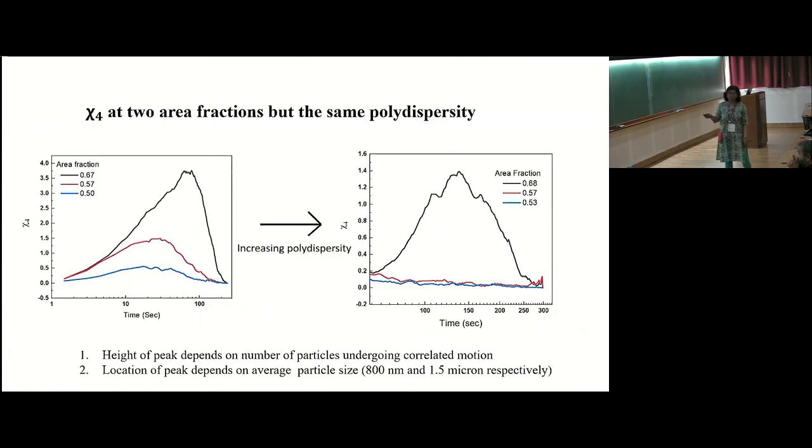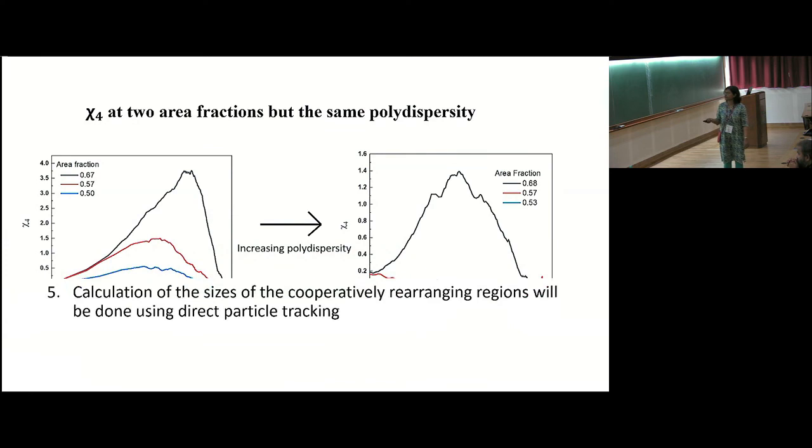So just as a comparison, what happens when we increase the polydispersity? So this is for the polydispersity of 9%. This is for 18%. So notice the scale here. This is the chi-4 for the suspension with the lower particle polydispersities. You can see the peak is much higher than in the case with the higher polydispersity. And it is also shifted a little to the right, though it is not really obvious from this figure. And as I already mentioned, that at even higher area fractions for the higher polydispersity, the chi-4 completely goes to zero. It's not measurable anymore.